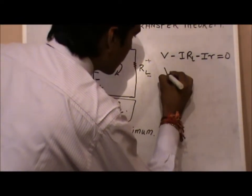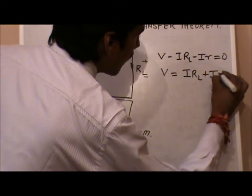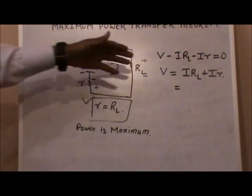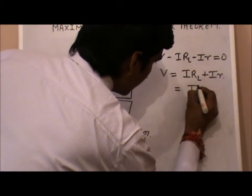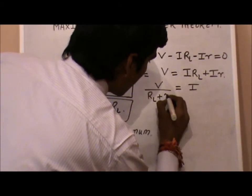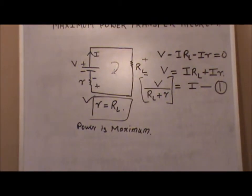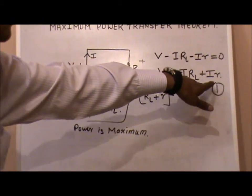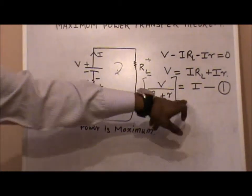Solving this equation using general algebra — taking i common and moving RL plus r to the denominator, skipping two to three steps — we get the final value of current i as: i equals V upon (RL plus r). This is noted as equation number one.